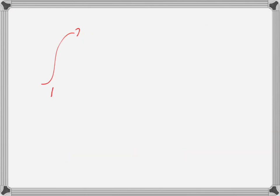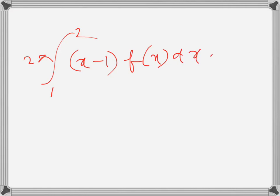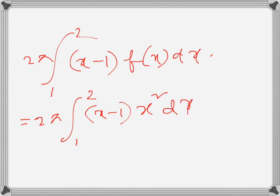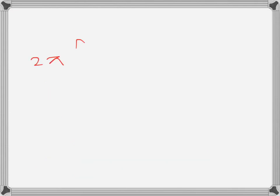So we integrate all the cylindrical shells: 2π times the integral from 1 to 2 of (x minus 1) times f(x) dx. Substituting f(x) equals x squared, this becomes 2π times the integral from 1 to 2 of (x minus 1) times x squared dx, which expands to 2π times the integral of x cubed minus x squared dx.